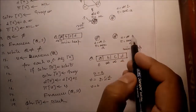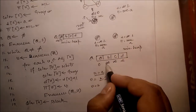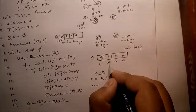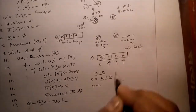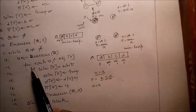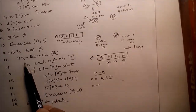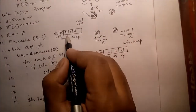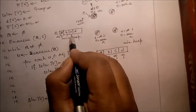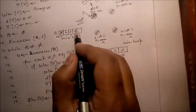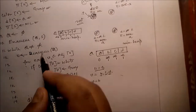So the distances are 1, 1, 1 for B, C, D respectively. While Q is not equal to phi — yes, Q is not empty because B, C, D are there. Dequeue the next element. Now U equals B.